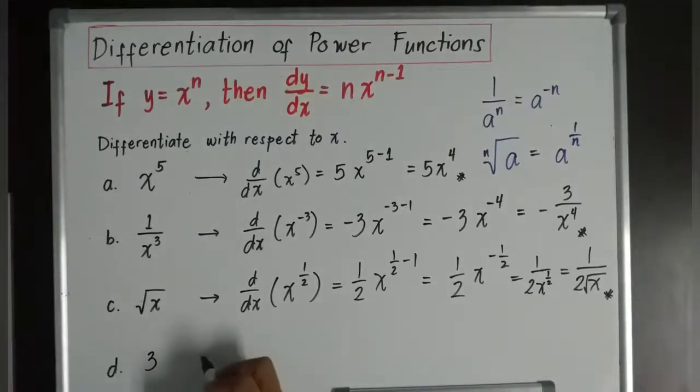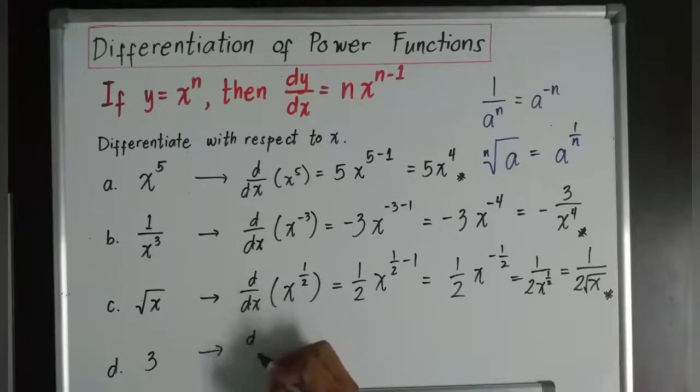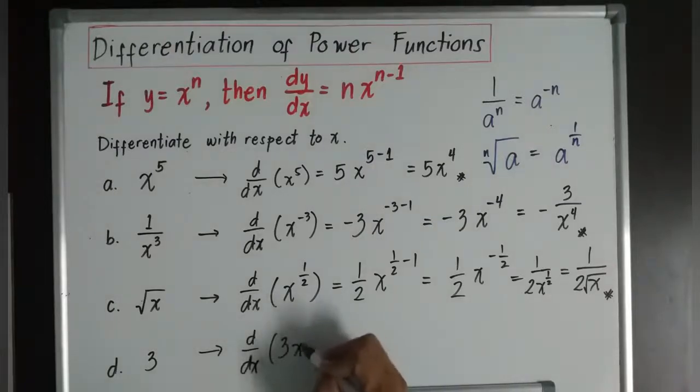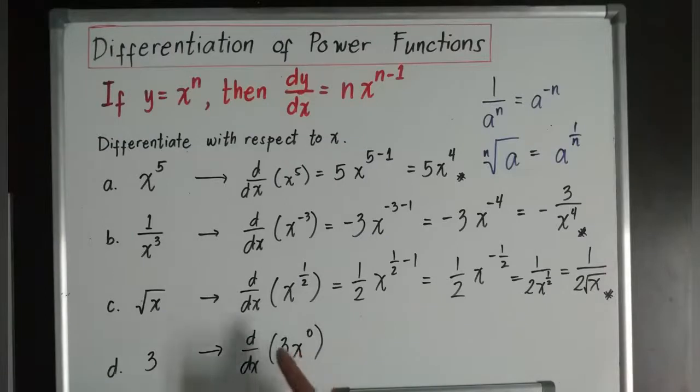Next, how about letter D? We don't have any x, so do we have anything that we can differentiate? Actually, if you are going to write 3 in terms of x, it will become 3x to the power of 0. Remember, x to the power of 0 is 1. 1 times 3 is 3.